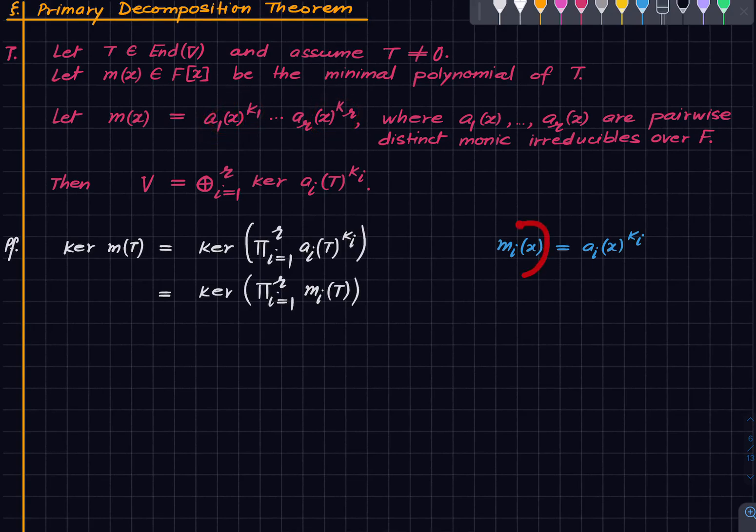So m_i(x), or I should say m_1 up to m_r, these are pairwise relatively prime polynomials. And hence by the previous lemma, this is the direct sum of these kernels, which is nothing but that.